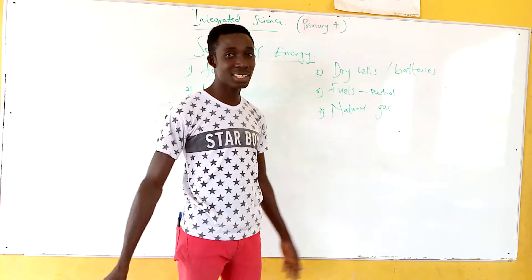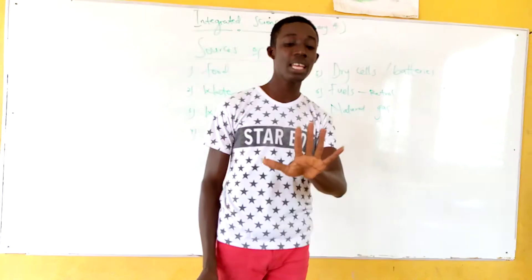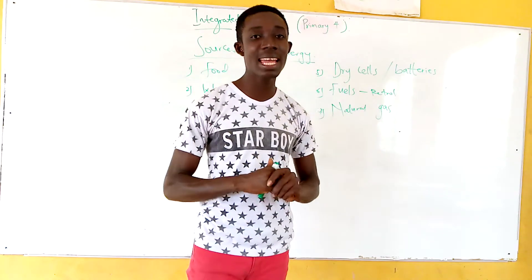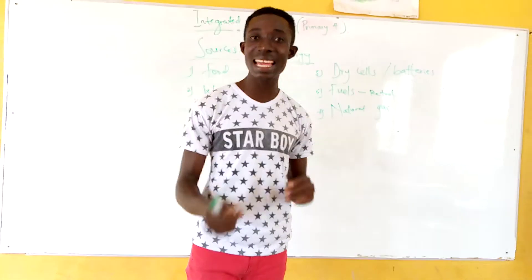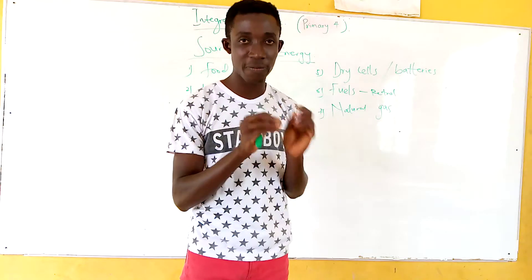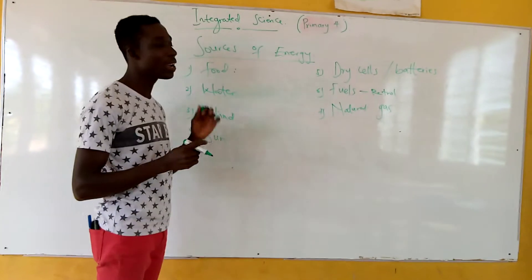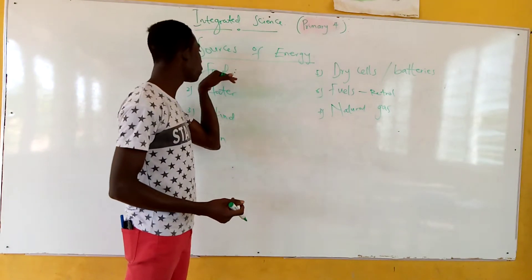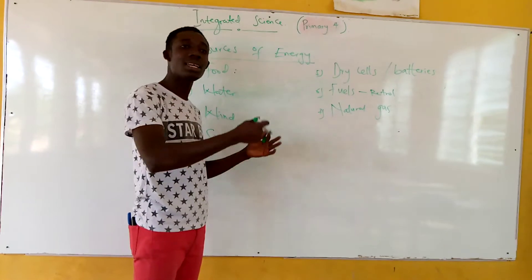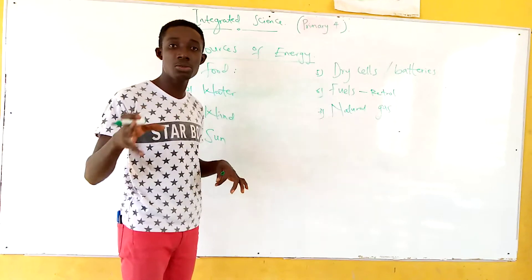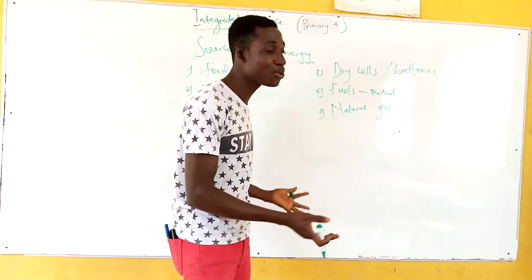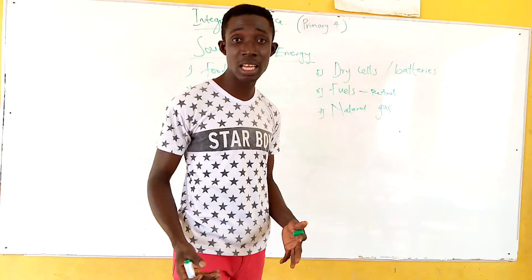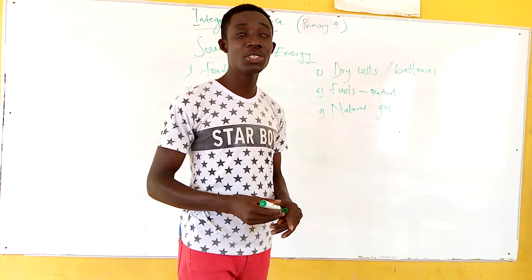So we are done with the lesson. Your assignment is simple: write five sources of energy and tell me what they are used for. For example, if you write food as a source of energy — humans eat food and get energy in order to learn, to work, to do activities, and to play. You need energy before you can play. Without energy you can't play — you will feel weak.